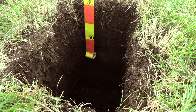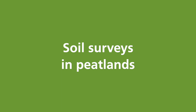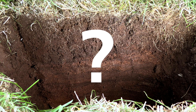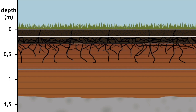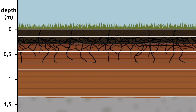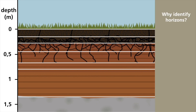Now let's take a look at how and why soil scientists need to examine peat soils in detail. If we look at a soil profile, we will see that different soil forming processes reach more or less deeply into the soil, leading to the formation of distinct soil layers with somewhat uniform parent material and structural characteristics. These layers are called soil horizons. In the German soil systematics, they bear the name of the main soil forming process that shaped them — for example, a strongly earthified horizon or a peat shrinkage horizon. Identifying soil horizons is necessary because the presence of diagnostic horizons or certain horizon combinations determines the soil types found on a soil map.